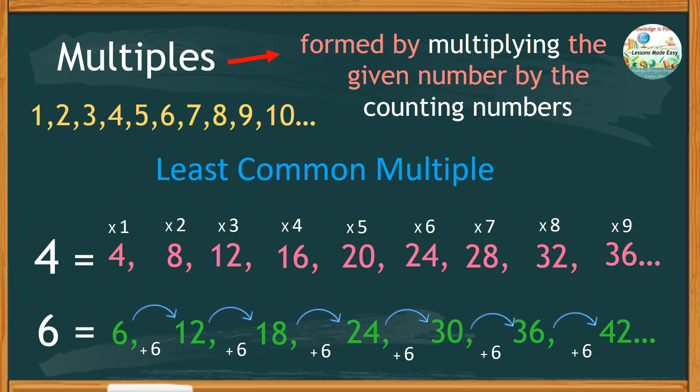So, let's check the common multiples of four and six. Twelve is common for both four and six, as well as twenty-four and thirty-six. But, among twelve, twenty-four, and thirty-six, the smallest number is twelve, and therefore, the least common multiple of four and six is twelve.